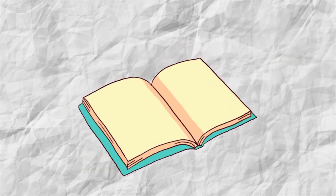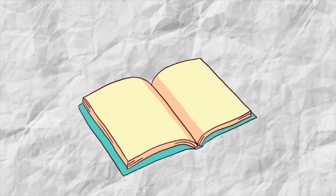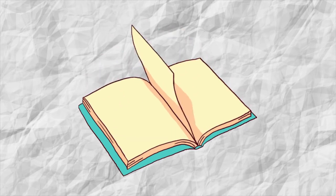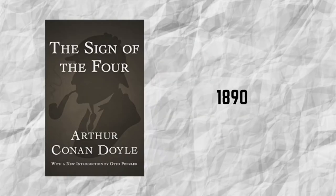The context of any literary text can provide important clues about the meaning of a text. We can uncover meaning in this story by understanding more about what was going on around the time it was written in 1890.